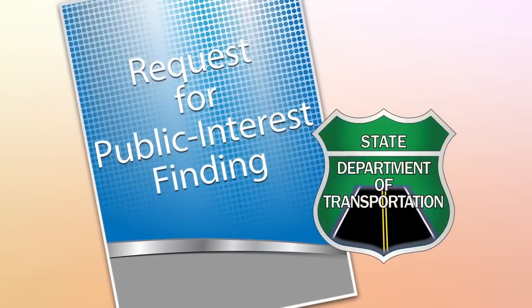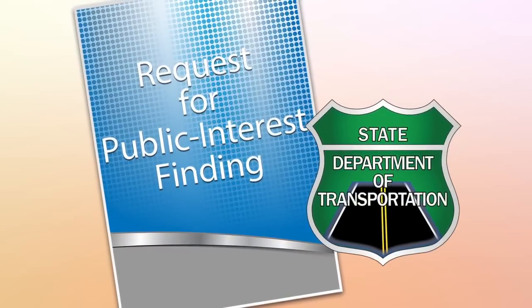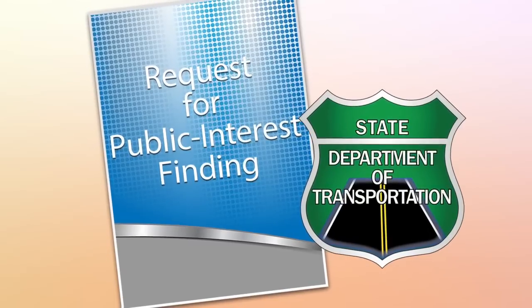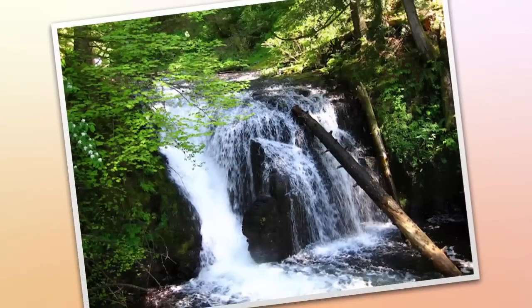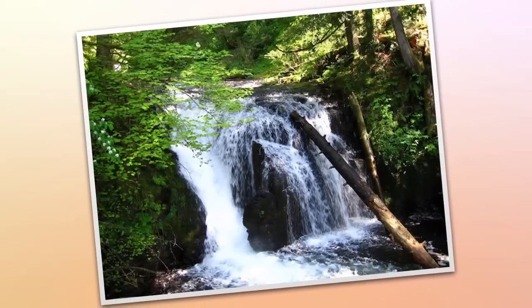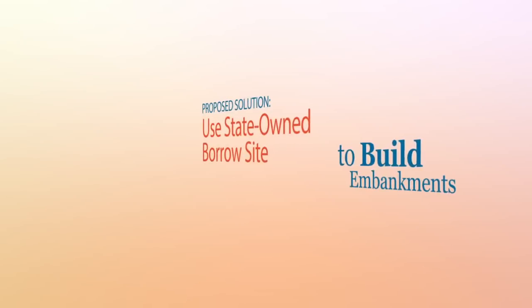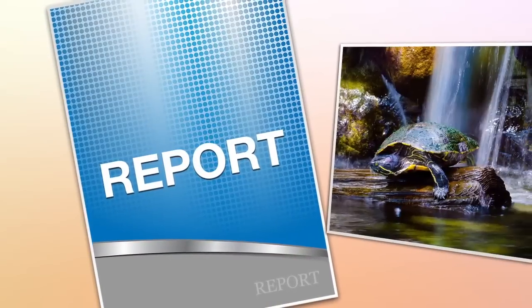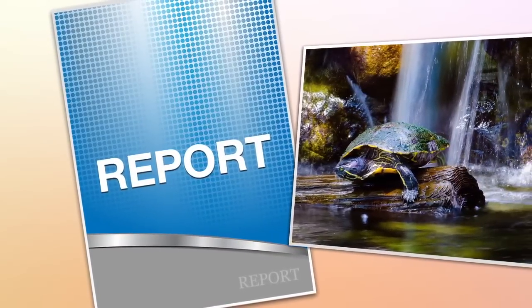To do so, the local public agency, or LPA, prepares a request for a public interest finding for consideration by the State Department of Transportation, or State DOT, as the oversight agency. As justification, the request cites the environmental commitment and the proposed solution to require the use of the State-owned borrow site to build embankments on the project. A report on the potential effects on the wildlife in the area is provided as support for the public interest finding.